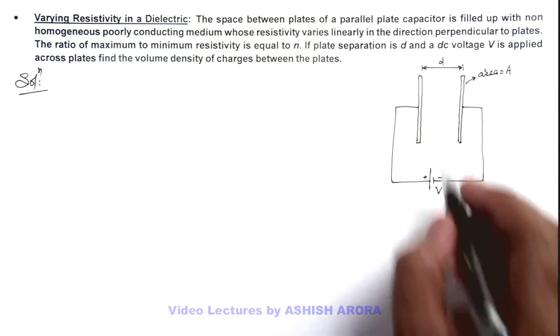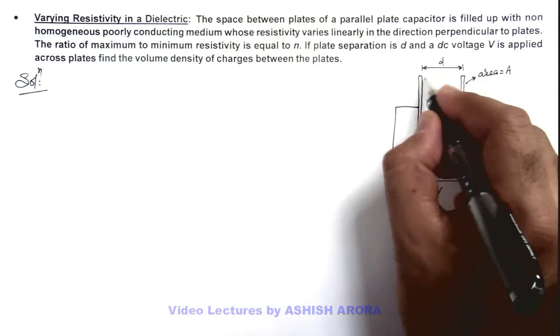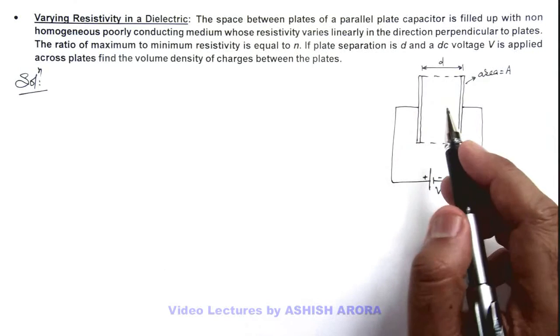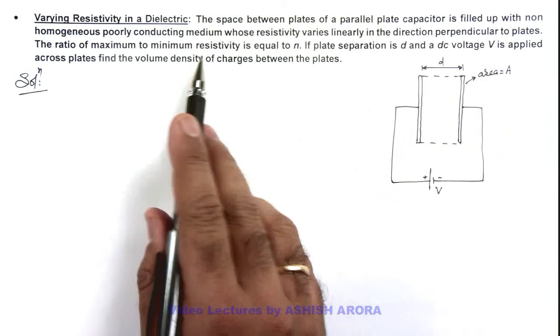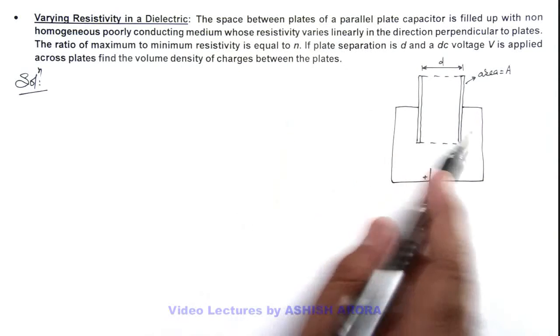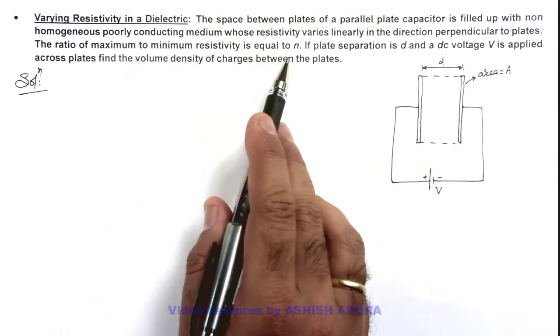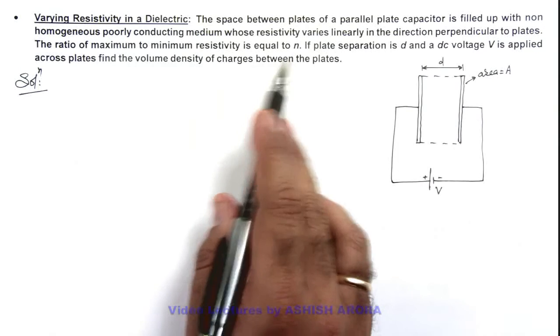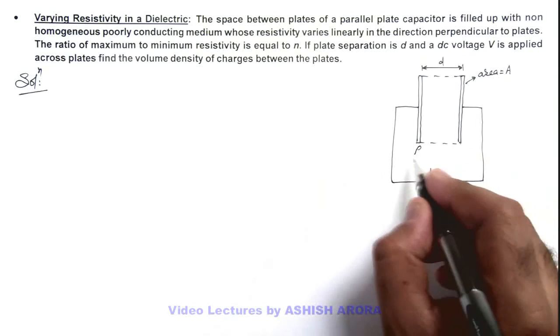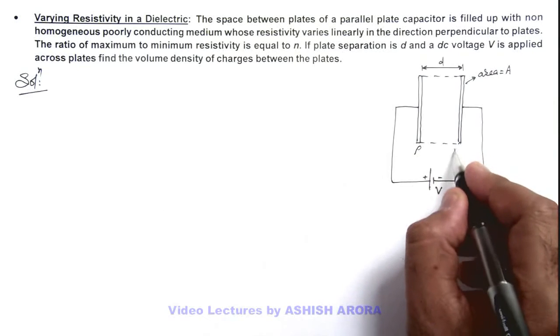In this situation, the dielectric is filled in between. We are given that the resistivity is varying linearly, such that from one end to other its maximum to minimum resistivity ratio is n. So here we can write if here resistivity is ρ₀, at this end resistivity will be nρ₀.